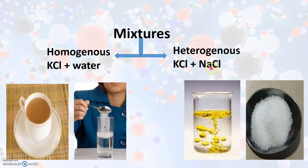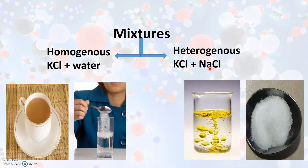Another example is potassium chloride mixed with sodium chloride. We can visibly make out a difference between these two substances, and they do not have a uniform appearance throughout because they have different compositions mixed in varying proportions. In the case of mixtures like potassium chloride and sodium chloride, we can separate the two substances by physical methods. It should always be noted that in mixtures, the constituents can be separated using various physical methods.